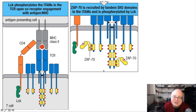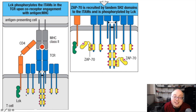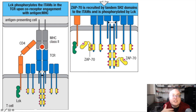To summarize the signaling cascade: MHC class 2 presents the antigen to the TCR. The co-receptor CD4 facilitates this interaction and brings the kinase LCK into the equation. LCK phosphorylates the ITAMs associated with the T-cell receptor. Once the ITAMs are phosphorylated, they recruit ZAP70 via SH2 domain interactions. ZAP70 is then phosphorylated and activated by LCK, and ZAP70 can now phosphorylate other things downstream.